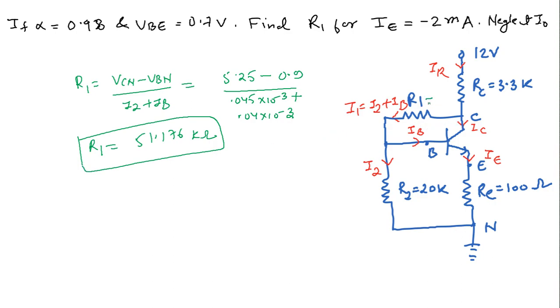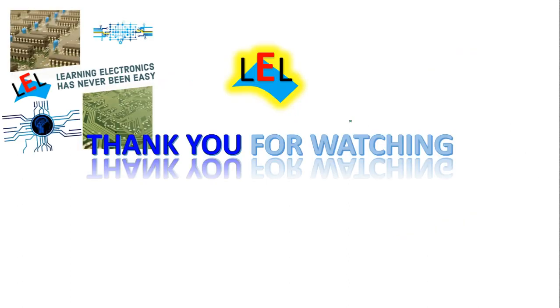R1 is approximately equal to 51 kilo ohms. Hope friends you have understood the topic. Thank you very much for watching and please do subscribe to my channel for more updates.